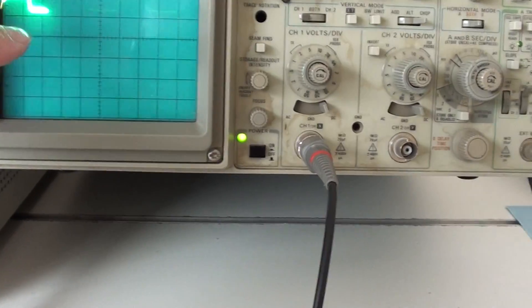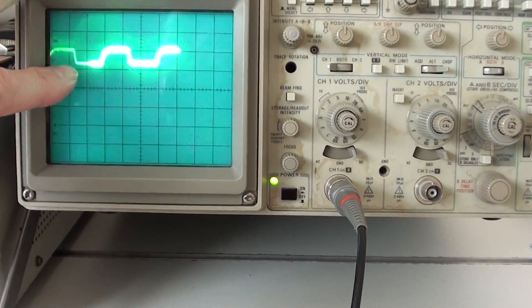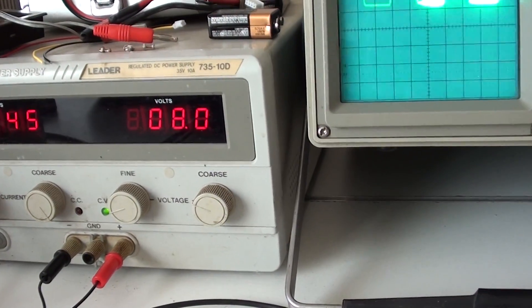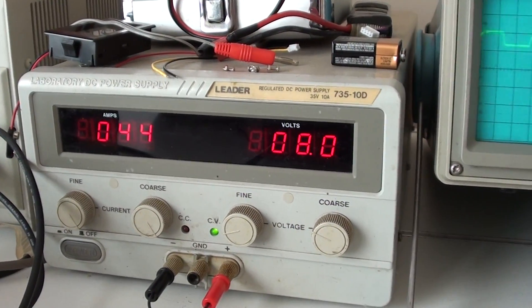Okay, like I said, this is on a 2 volts per division scale right now. So there's 2, 4, a little over 4 volts is all. I'm still only running 8 volts and I'm only pulling 0.45 amps.